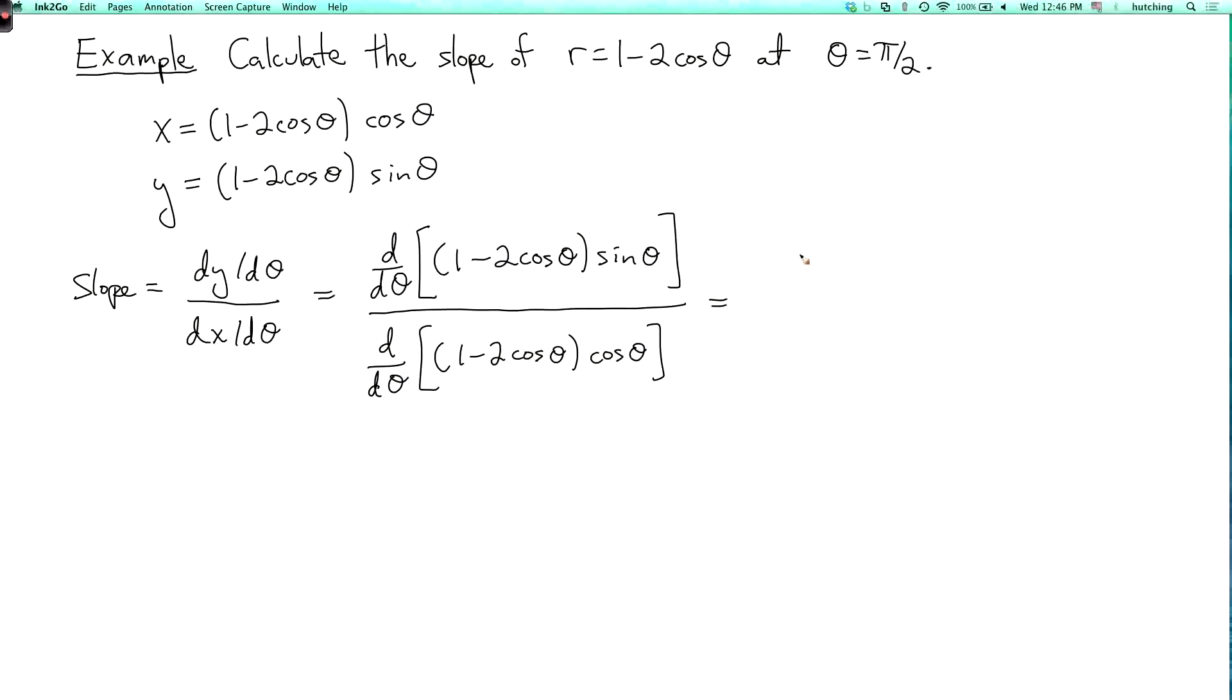So on top here by the product rule I have 2sin(θ)·sin(θ) plus (1-2cos(θ))·cos(θ).